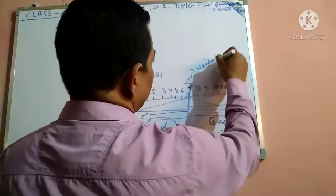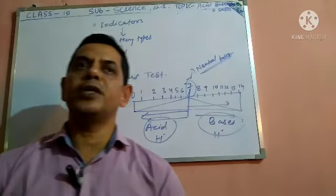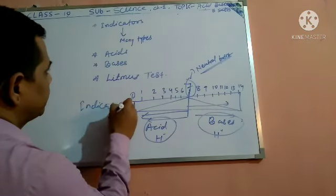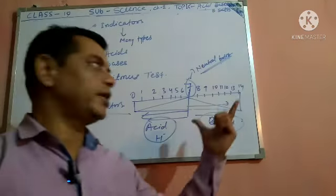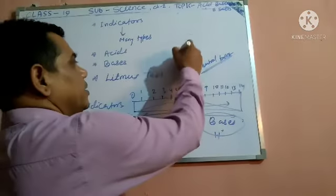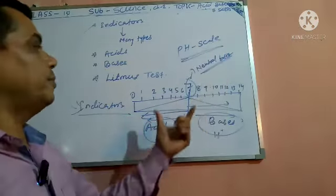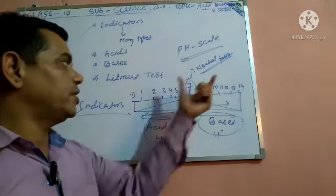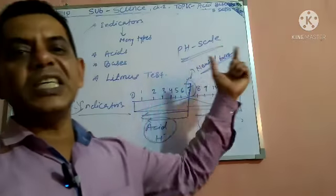And 7 is the neutral point. So any substance is said to be acidic or basic depending on the indicator — that indicator name is pH scale. Through that indicator you can find the Acid and Bases. So pH scale — pH means Power of Hydrogen — tells how much power of hydrogen a material has.